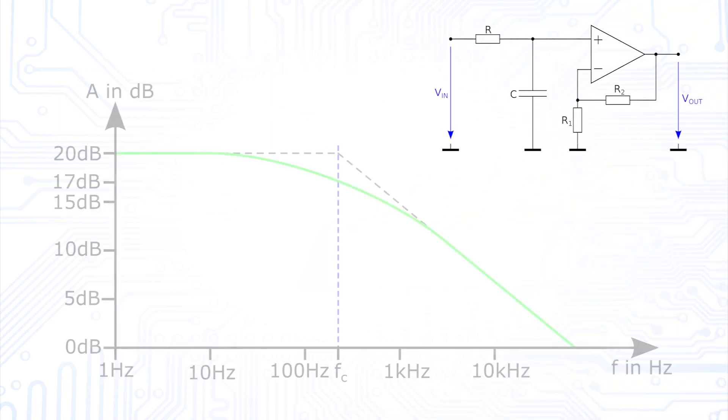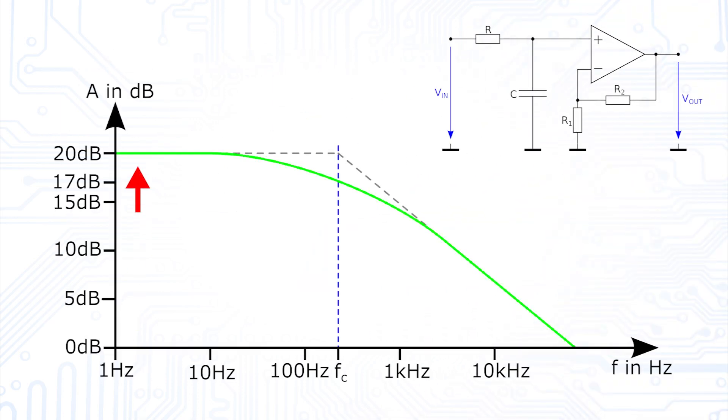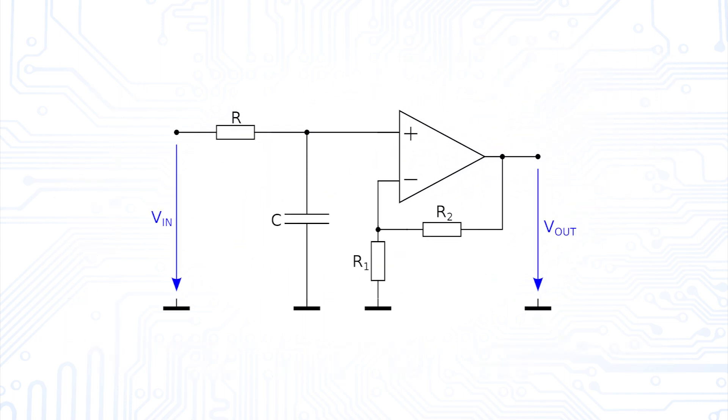Looking at the Bode plot of this circuit, we see that the attenuation that occurs after the cutoff frequency has a value of 20 dB per decade. If we want to achieve a steeper attenuation, we have to increase the order of our filter.